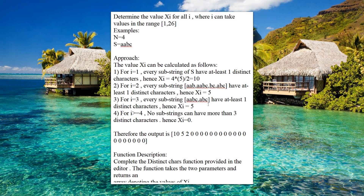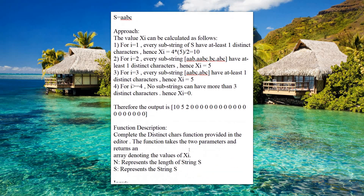For i equal to 3, substrings with at least 3 distinct characters are 'aabc' and 'abc', so xi equals 2. For i greater than or equal to 4, there is no such substring because the length of the string is 4, so xi equals 0. Therefore the output will be: 10, 5, 2, followed by zeros for the remaining positions up to 26.